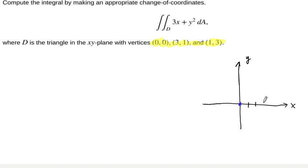The other two are (3,1) and (1,3), so I'm just going to put some tick marks here. (3,1) is going to be right here, so this is (3,1) in the xy plane, and (1,3) is up here. And so if we connect these together, then this triangle right here, this is our domain D in the xy plane.